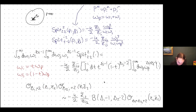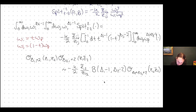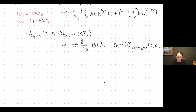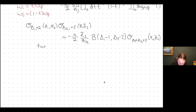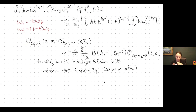The nice thing about this result is that we've separated out the analytic behavior in delta_i from the collinear limit of the operator. Tuning omega turns into analytic behavior in delta_i, and the collinear limit structure is much more like a normal CFT OPE. If I told you my CFT has a set spectrum, this would be the starting point of the data for that CFT.